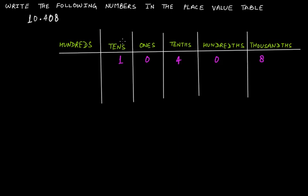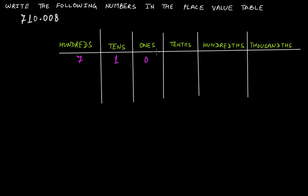What if the number is 710.008? Zero is at the ones place, one is at the tens place, and seven is at the hundreds place. So seven comes at the hundreds place, one comes at the tens place, zero comes at the ones place. After the decimal, zero is at the tenths place and zero is at the hundredths place.